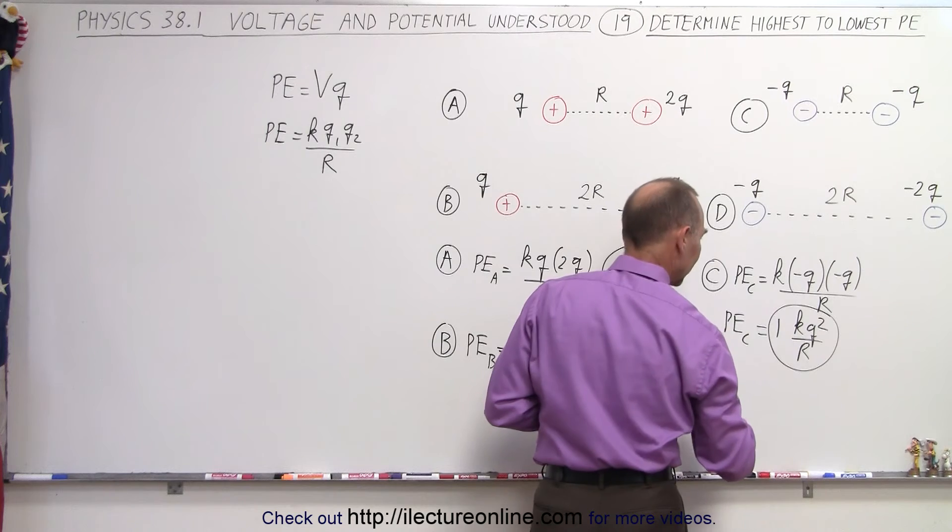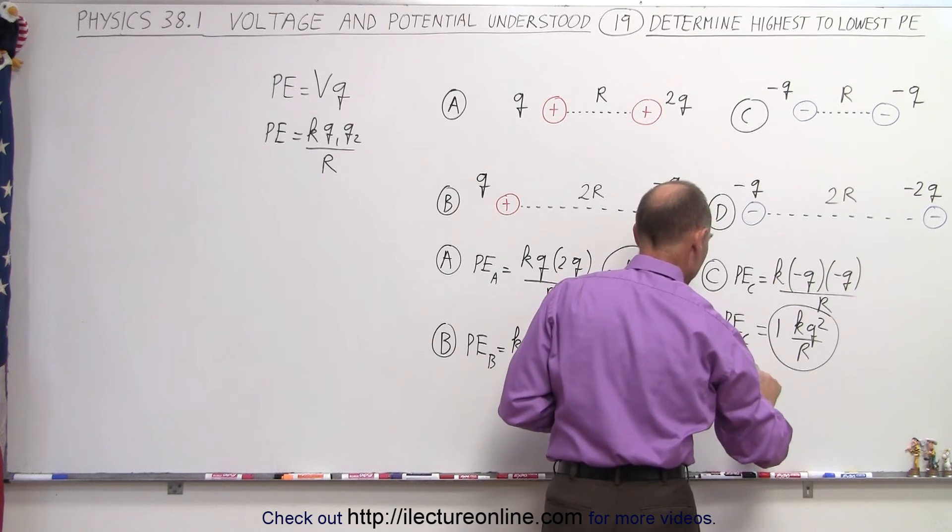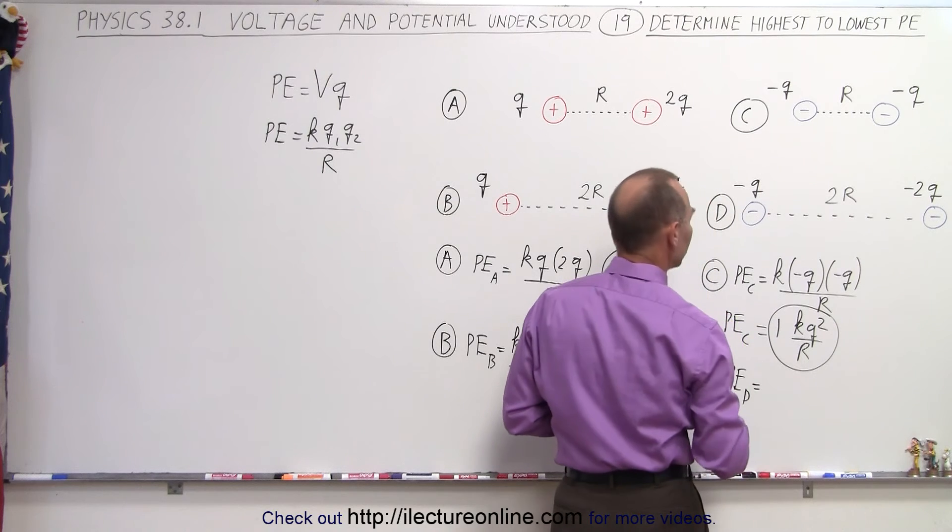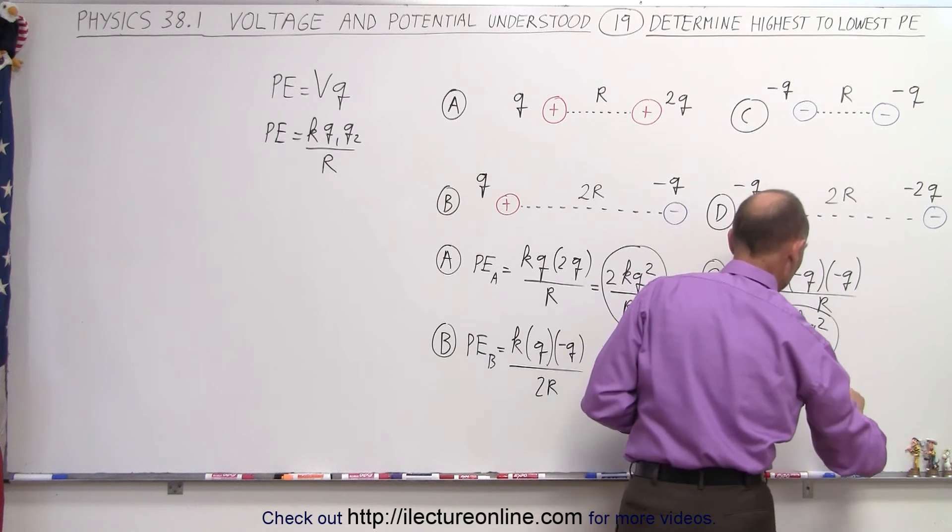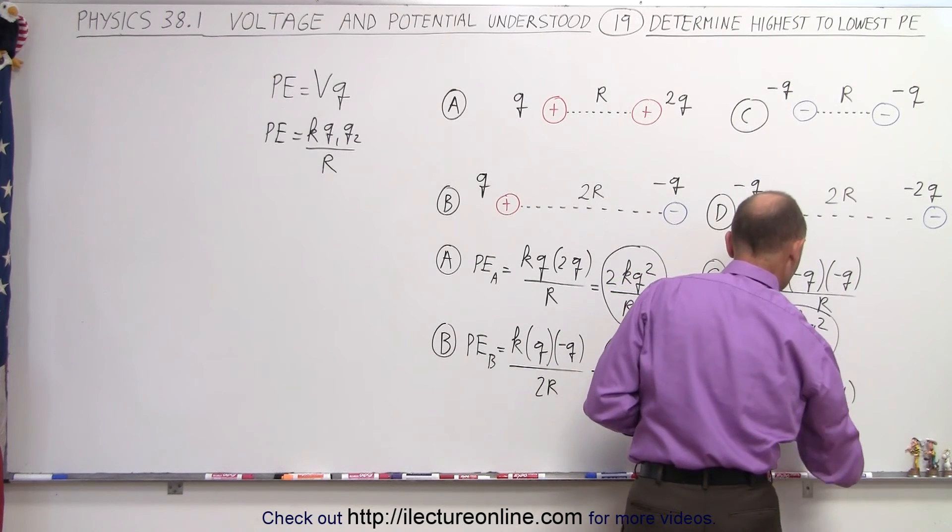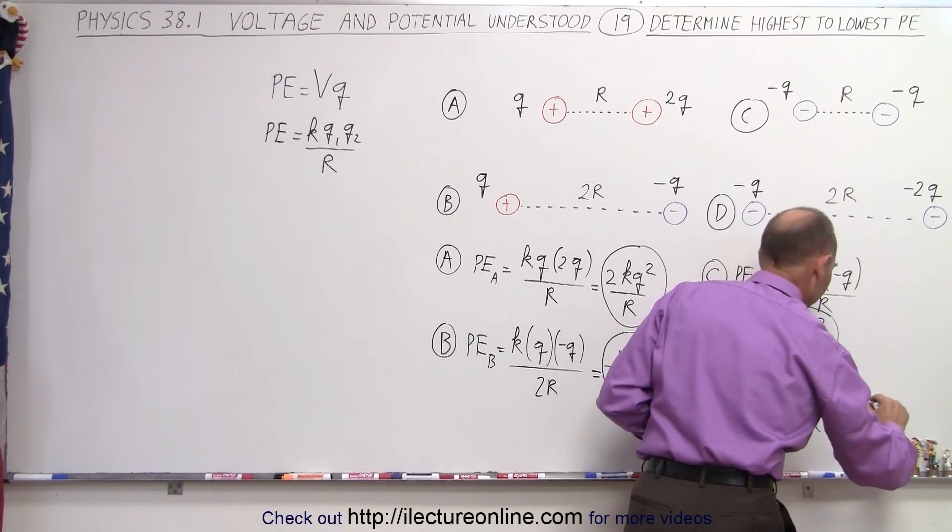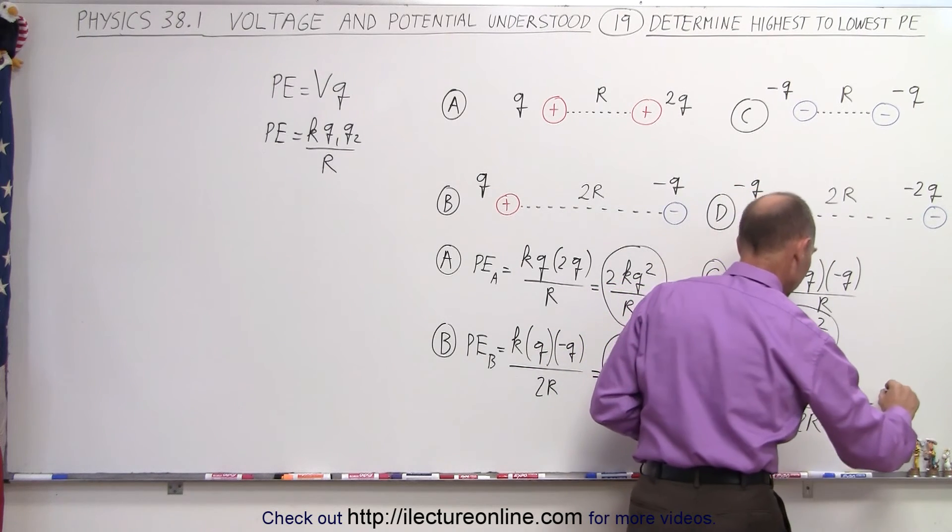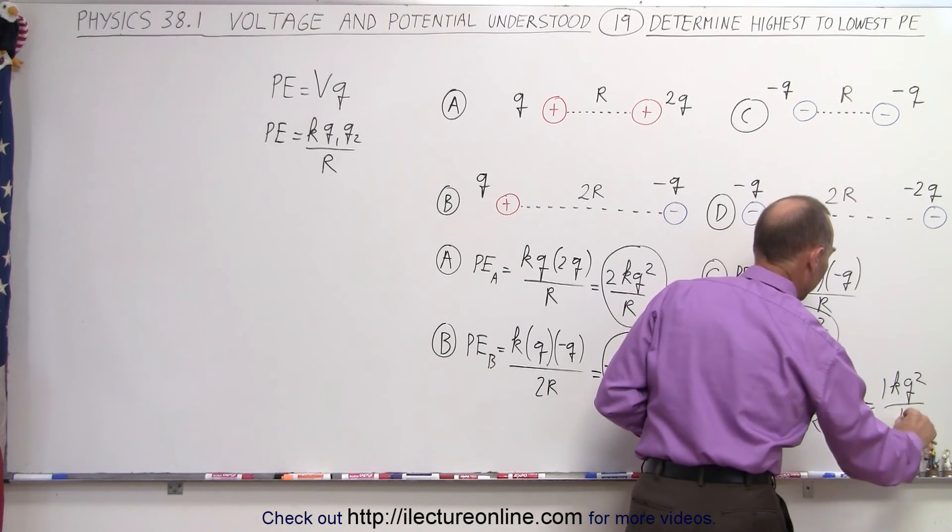And finally for D, I guess I should have put it over there, because I'm running out of room. That would be PE_D. So in this case, that would be K times the negative Q times the negative 2Q, all divided by a distance of 2R apart. So it looks like this is also going to be equal to a 1KQ squared divided by R.